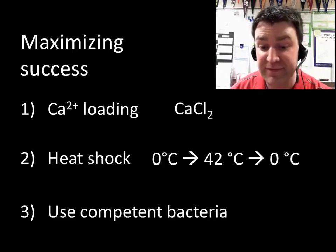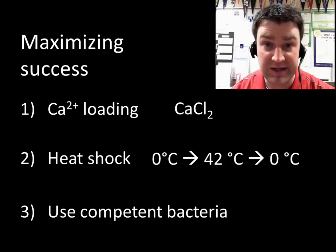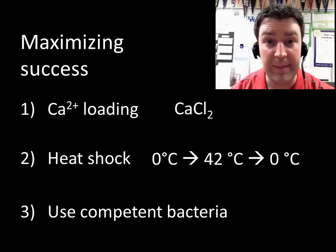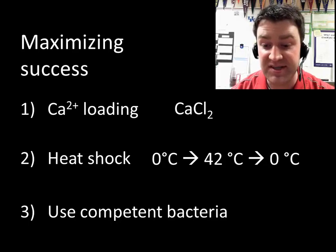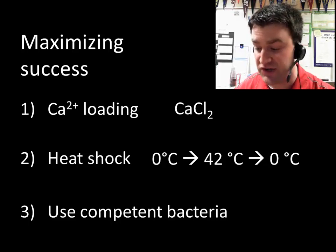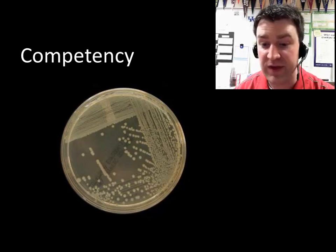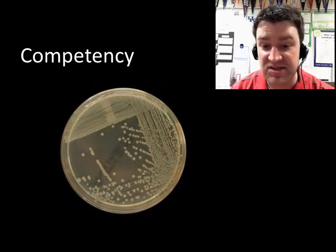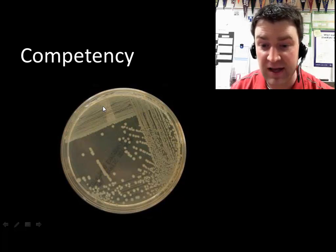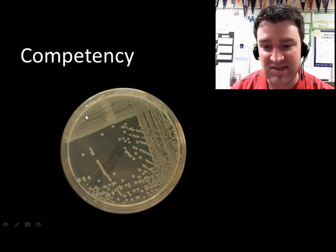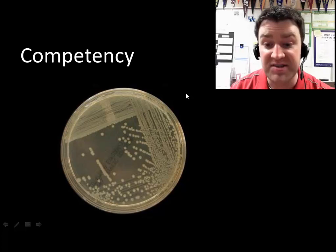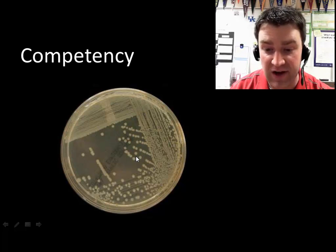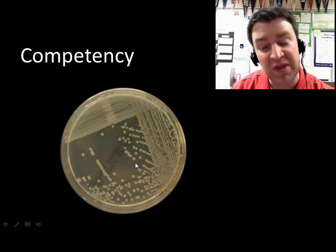So heat shock and then finally we want to use the right kind of bacteria. So we call this competency. Competency here refers to how often you might transform. And if you get a starter plate that looks like this when you come into lab the temptation is to use the bacteria up here because there's just so much more of this white. So you figure the more bacteria at least I'll be successful with some of them.